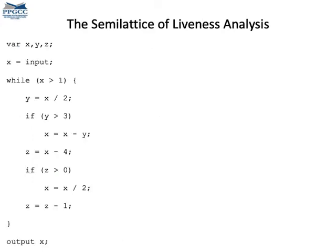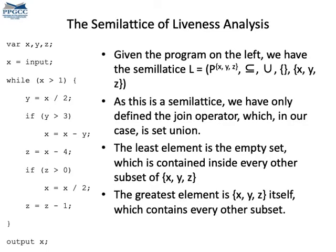Now, let's see how a semilattice emerges in liveness analysis. Consider this program on the left. From this program, we can talk about the power set of its variables. The program has three variables, x, y and z. The power set of the set of three elements has eight elements. All the possible subsets. Then we use inclusion as the less than operator and union as the join operator. Our top element is the set with x, y and z. And the bottom element is the empty set.